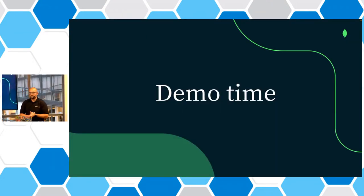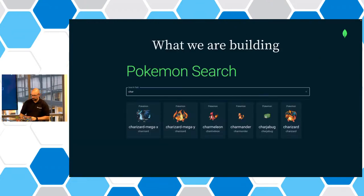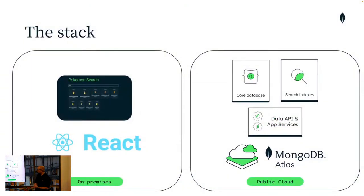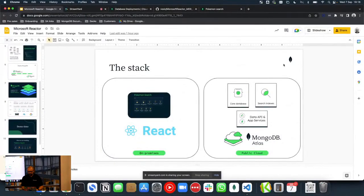Enough PowerPoints — let's do a demo. We're going to build a simple application for Pokemon searching. A lot of people jumped on catching Pokemons out in the wild, and maybe you're interested to find out which Pokemons there are. I created a small application with a search field to search for Pokemons. The frontend is built in React running on my machine, the backend will be hosted on MongoDB Atlas, using the core database and Atlas Search to facilitate the searching.